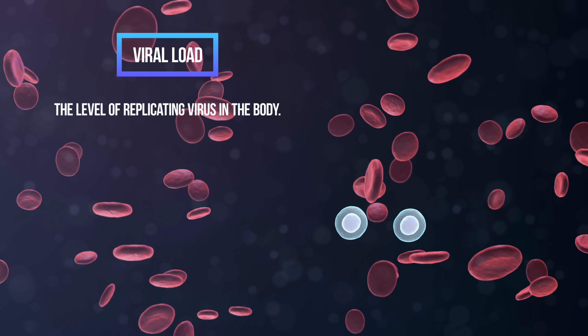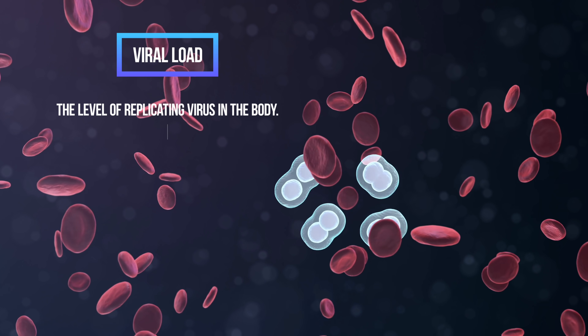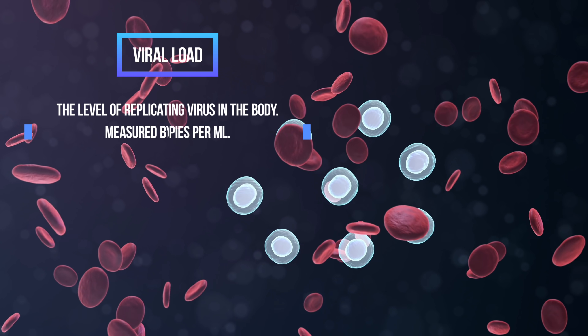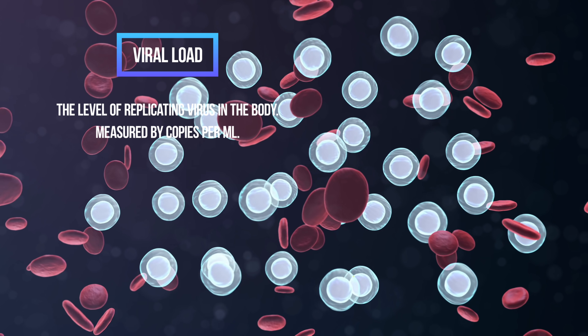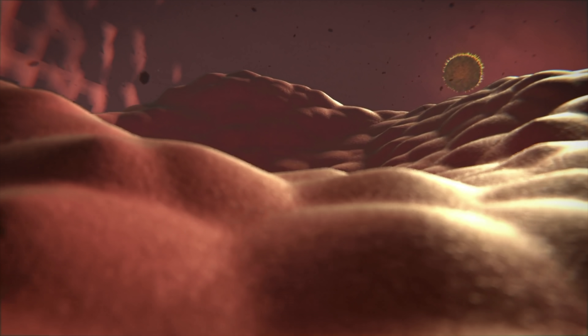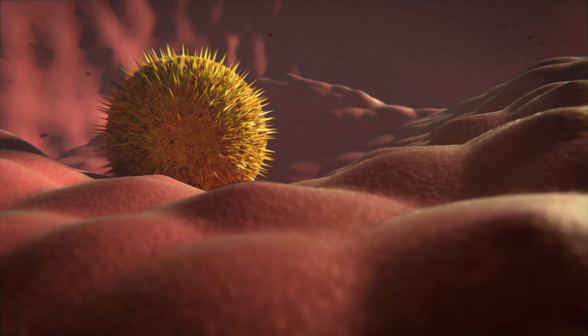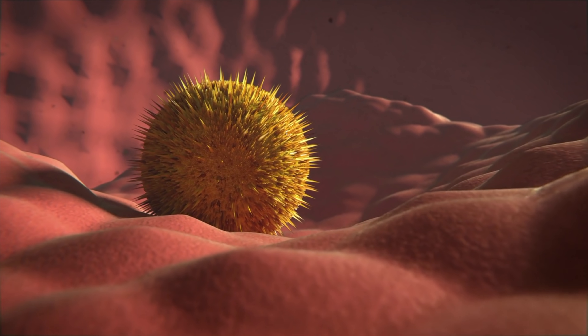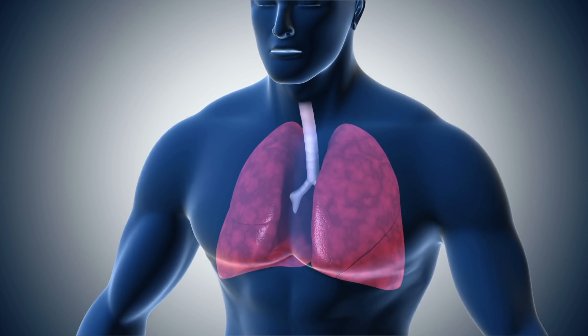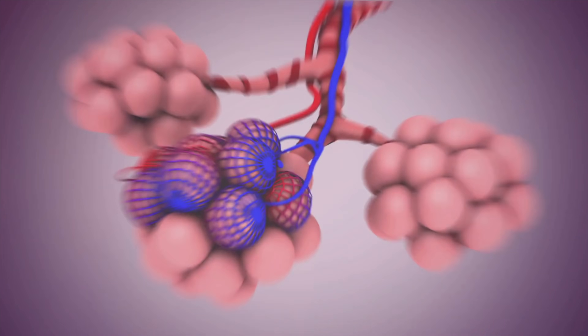Viral load is the level of replicating virus in the body, and it's measured in copies per milliliter. We can determine whether the SARS-CoV-2 virus is present in the human body by collecting samples from the nose, the respiratory tract, blood, or urine. When the SARS-CoV-2 virus reaches the respiratory tract and binds to the ACE2 receptors on human cells, viral particles enter respiratory cells and reproduce.